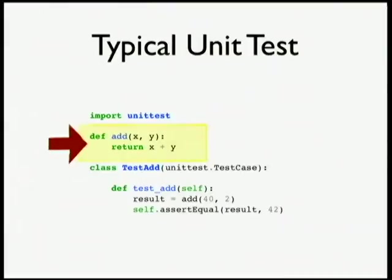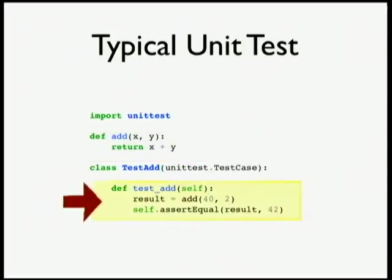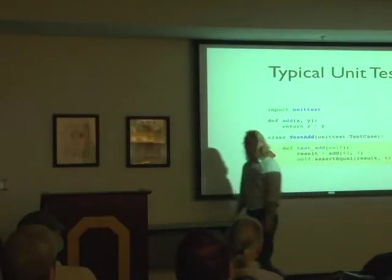I've come up with this really contrived example of something that we can unit test. I've got this function — you give it a couple parameters and it returns a result. A unit test might look like this: we have a test case with a test add method. To test our add function, we just call it. I know what parameters I'm passing in, so I know what sort of result I should get. I can verify that I get the right result — 40 plus 2 should be 42.